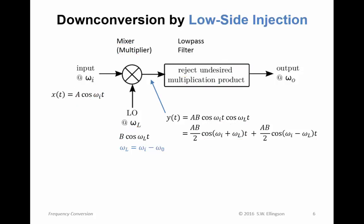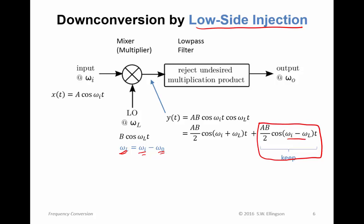First, down conversion by low side injection — reducing frequency in a particular way. Low side injection means the LO frequency is less than the input frequency. When that's the case, the difference term is the one we want to keep, because it gives us the desired output frequency. We discard the sum term, using a low pass filter to do that.